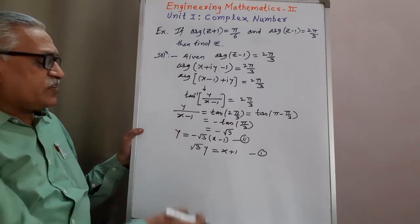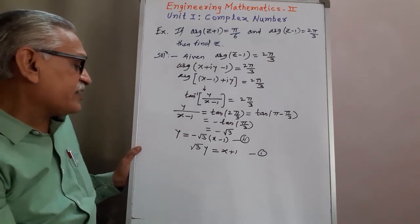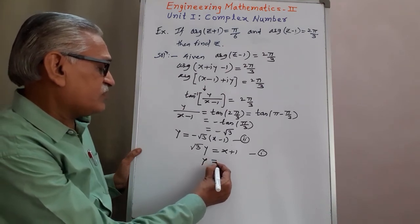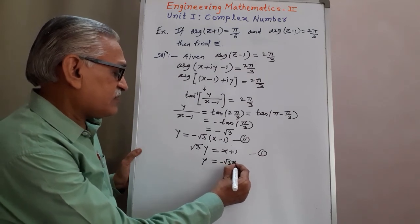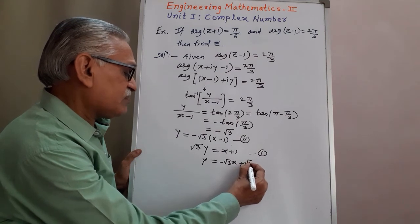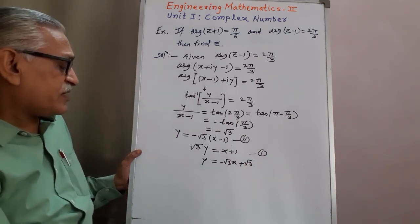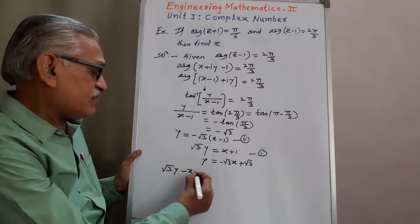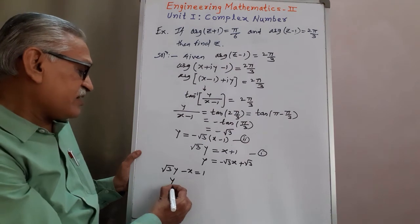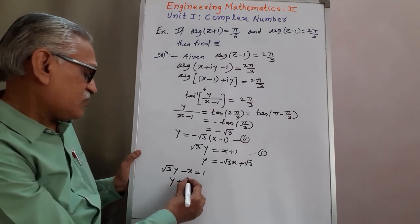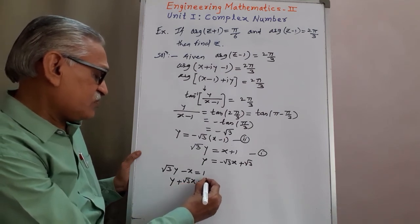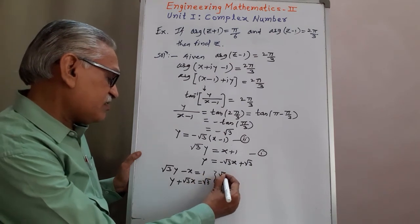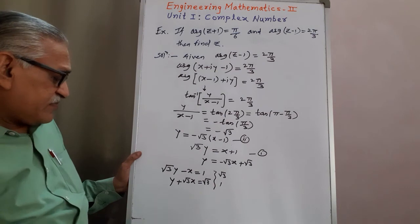Solving these two equations simultaneously for x and y. Rewriting Equation 2: y equals minus root 3 x plus root 3. This gives root 3 y minus x equals 1. And from Equation 1 rearranged: y plus root 3 x equals root 3.